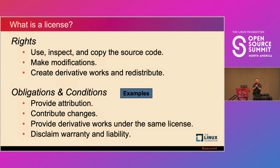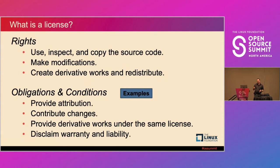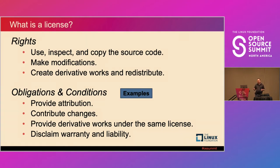Another very common obligation in most open source licenses is to disclaim warranty and liability — the concept of 'as is.' Most licenses will say: this software is provided as is, there's no warranty, I accept no liability, you use it at your own risk. By using that project or package, you are agreeing to use the software as is.